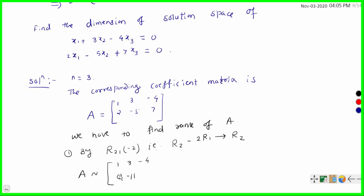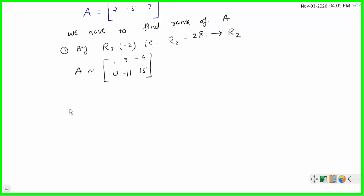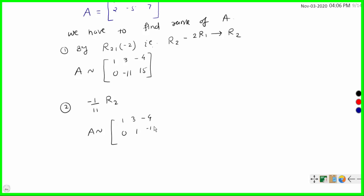Why do we get 0? Because −2×1 + 2 = 0. Then −2×3 − 5 = −11, and −2×(−4) + 7 = 15. The second operation is (−1/11)R2 to bring a leading 1 in row 2. So A is equivalent to [[1, 3, −4], [0, 1, −15/11]].